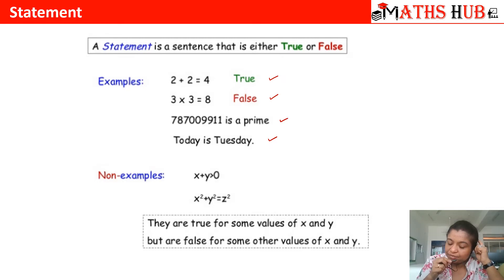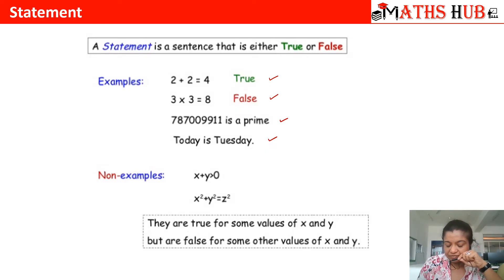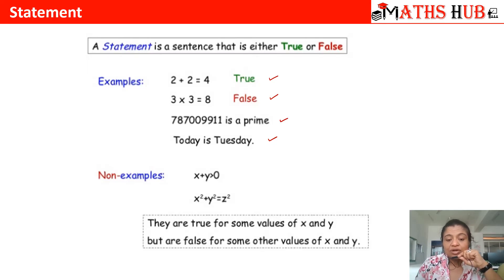Now consider x plus y is greater than 0. You don't know what x and y are. When you take x and y to be positive, it is 100% going to satisfy the relation. But when you take negative numbers, it will not satisfy the relation. For certain x and y it is true, and for certain x and y it is not true. So this is not a statement — this will just be a sentence.